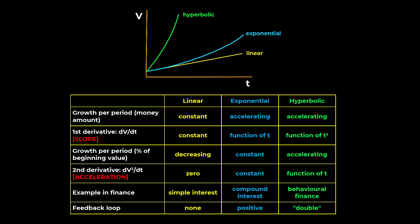Unlike exponential growth, the growth rate as a percentage also accelerates with the passage of time. This is shown mathematically by a second derivative for hyperbolic growth which is time dependent, resulting in a double positive feedback loop.